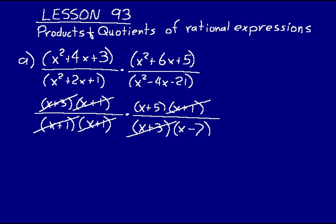We're only left with one binomial in the numerator and one in the denominator. Our answer is X plus 5 over X minus 7. That is the simplified form of that rational expression.